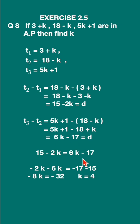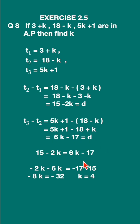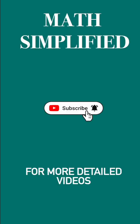Bring 6k to the left-hand side — it becomes minus 6k — and bring 15 to the right-hand side, giving minus 17 minus 15. So minus 8k = minus 32, which simplifies to k = 4.